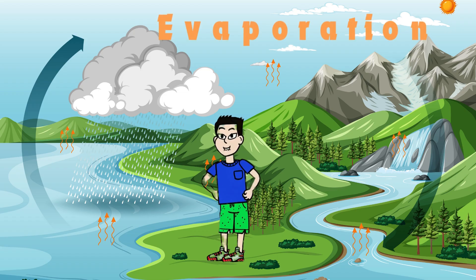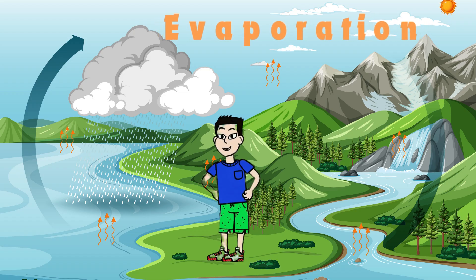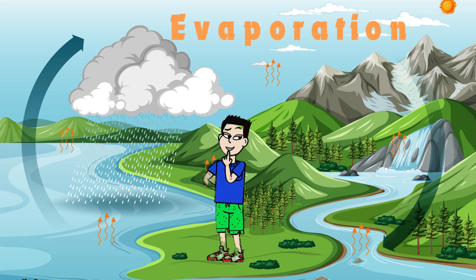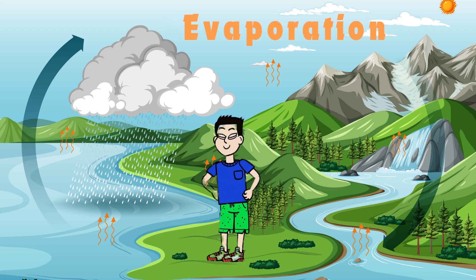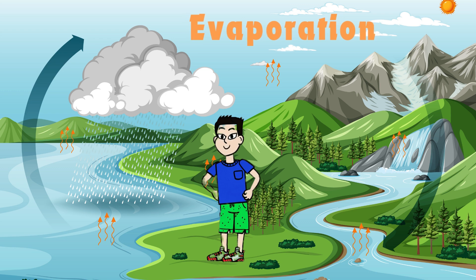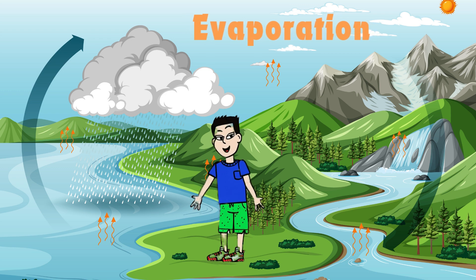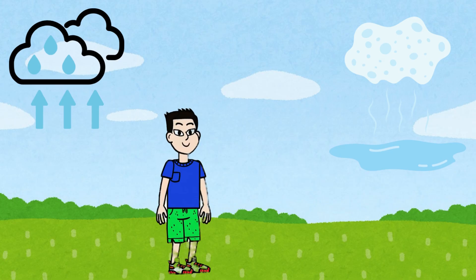Do you know there are five stages in rain? The first is evaporation. The sun heats up water in rivers, lakes, and oceans, turning it into water vapor. This water vapor rises into the air.